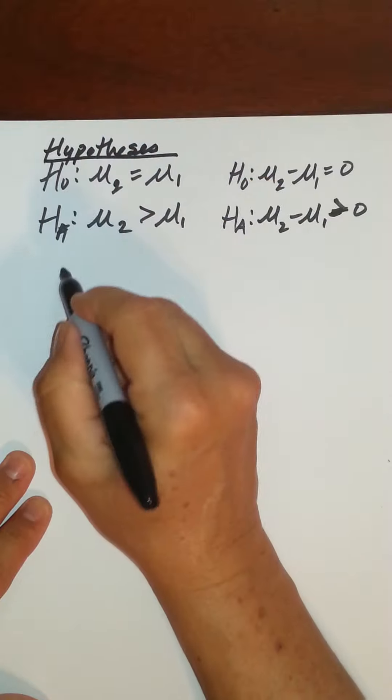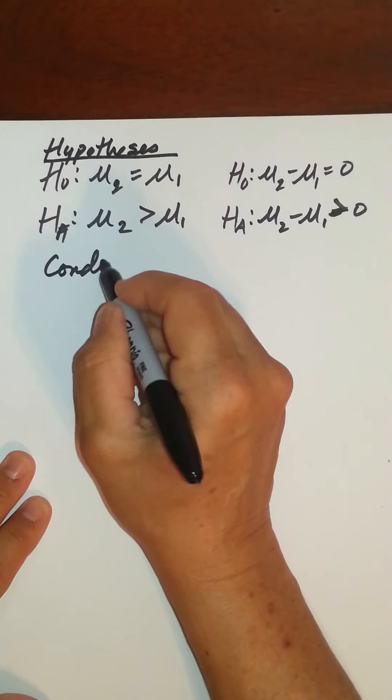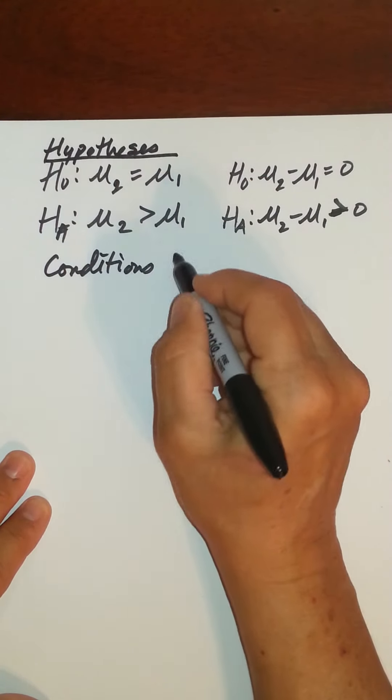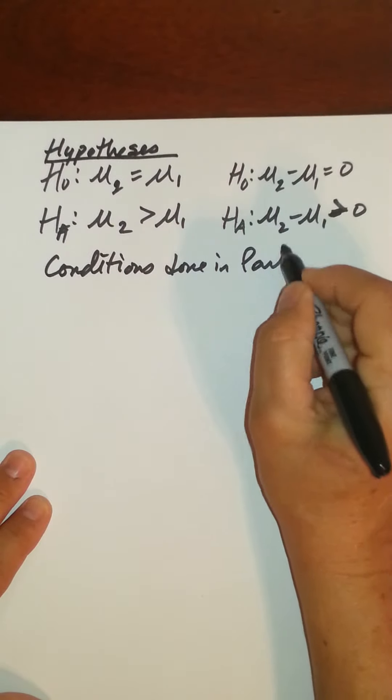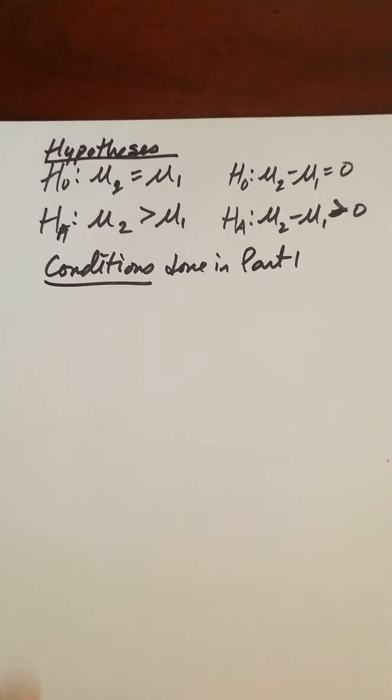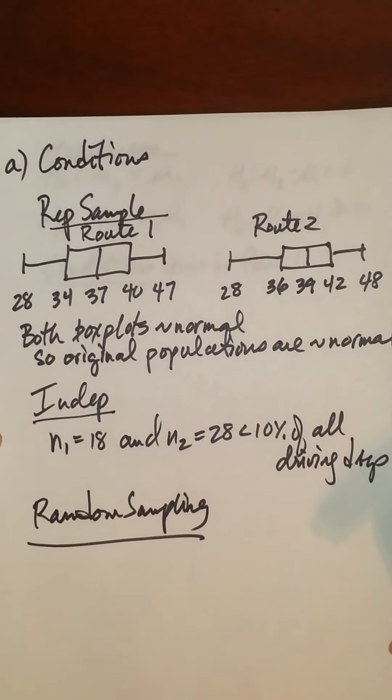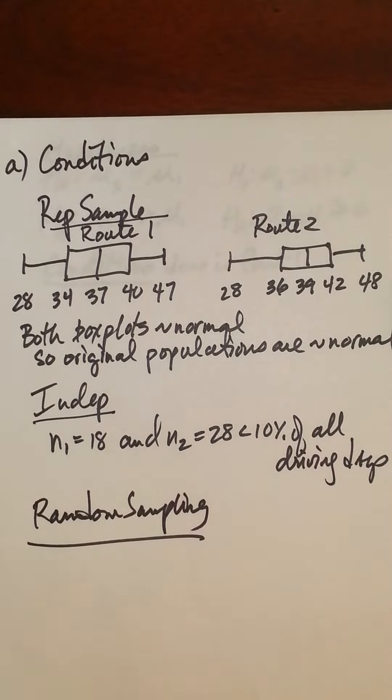And then the conditions have already been done in Part 1. So you can check that, I'll just put this up here when we did our box plots and checked for all the three conditions here. We got everything was fine. And you can pause the video and just see if you get the same thing, or you could watch Part 1.